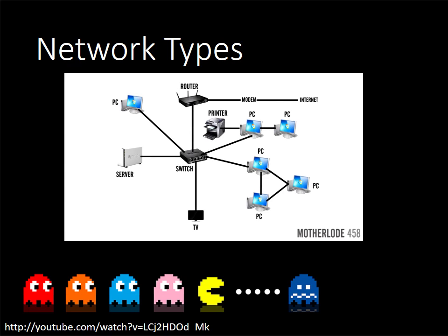In a basic LAN network, the switch is connected to the router and the router is connected to the internet. There are multiple PCs connected to the switch along with a printer and a server. If you want to print something, it's very easy since every device connected to a LAN can exchange data with each other.